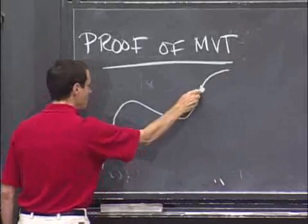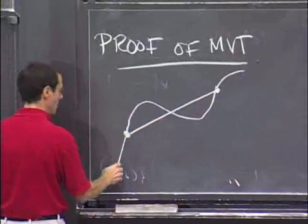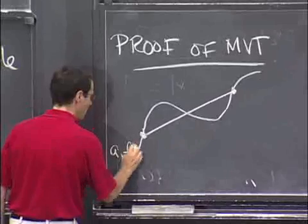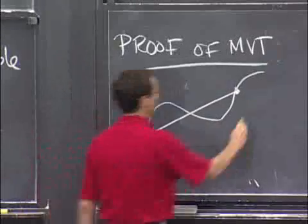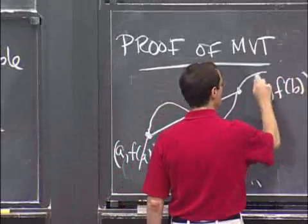And this line here is the secant line. So this is a, f of a down here. And this is b, f of b up there.